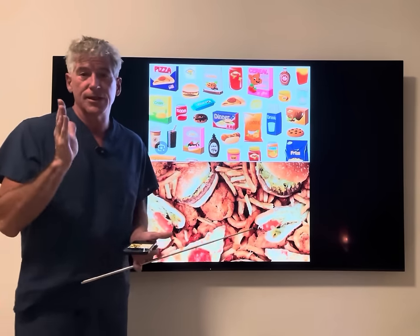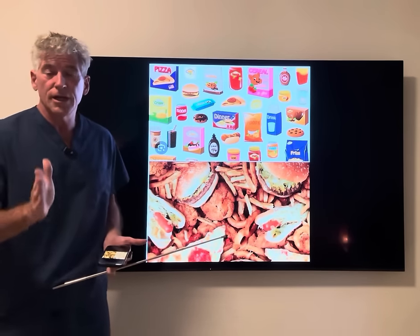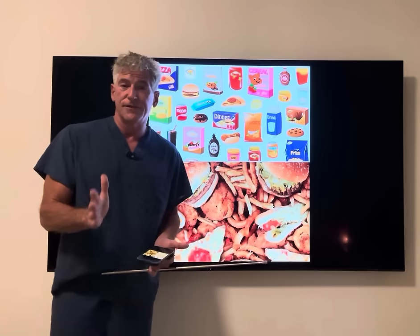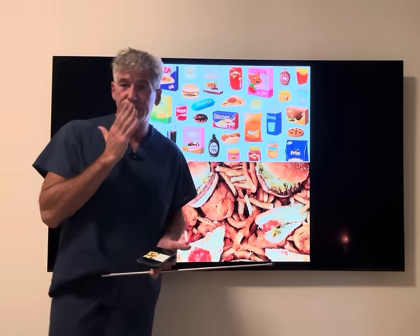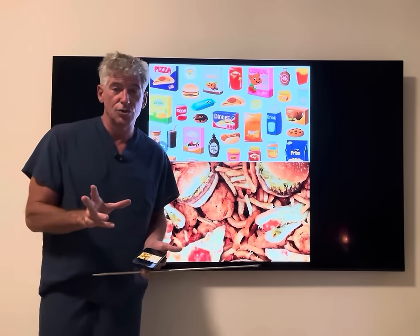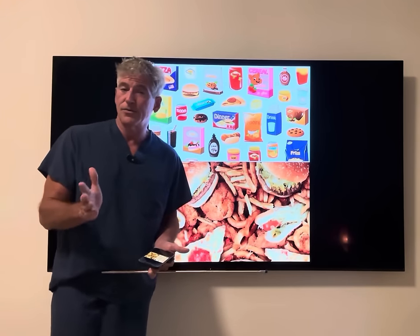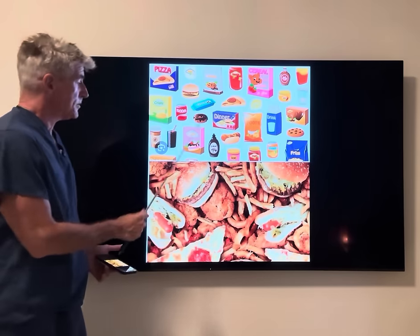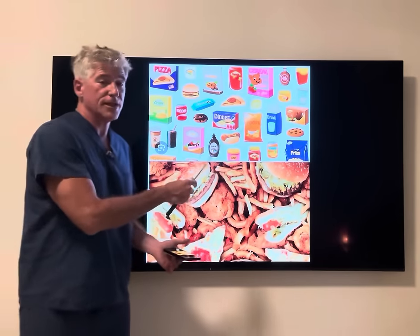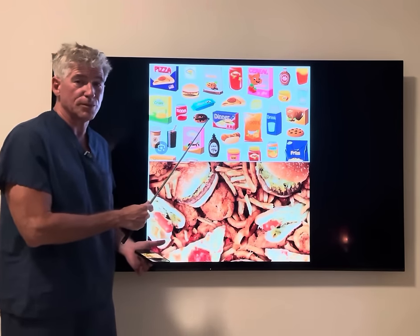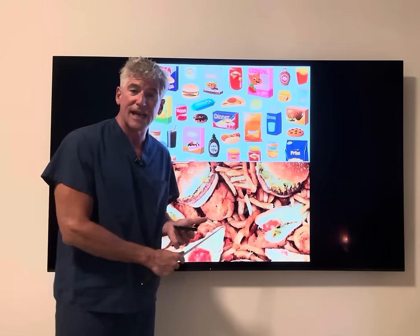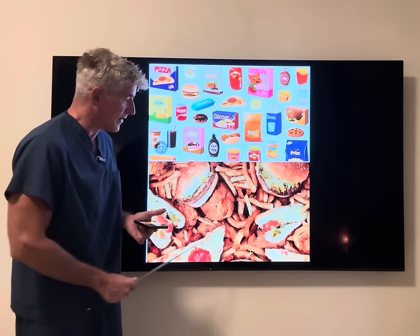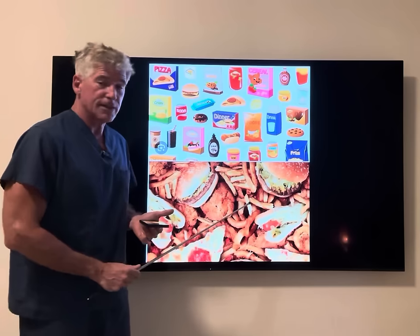Now let's talk about the five things that cause stubborn belly fat and make it really hard to get rid of. First and foremost is processed food. Processed foods typically come in bags and boxes, but also include fast food, restaurant food, and delivery. You want to be eating food in whole form — chunks of meat — and not things that are processed.